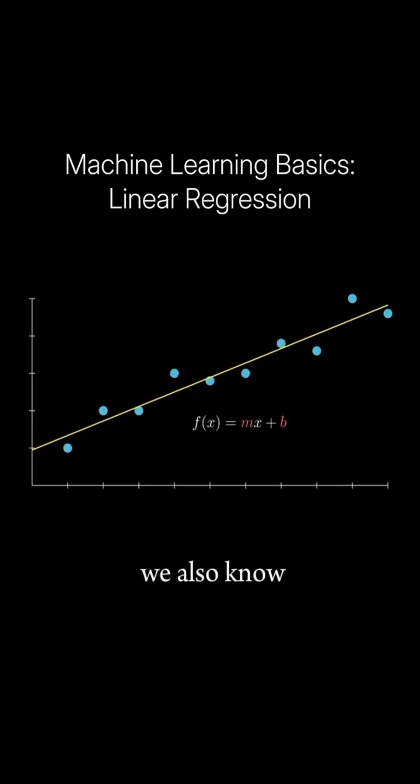In machine learning we also know it as the bias. These two coefficients are what we are solving for in linear regression.